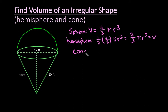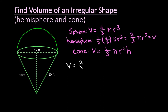The volume of a cone is equal to one-third pi r squared h. So to find the total volume of both shapes together, we take the volume of the hemisphere — two-thirds pi r cubed — and add the volume of the cone — one-third pi r squared h.